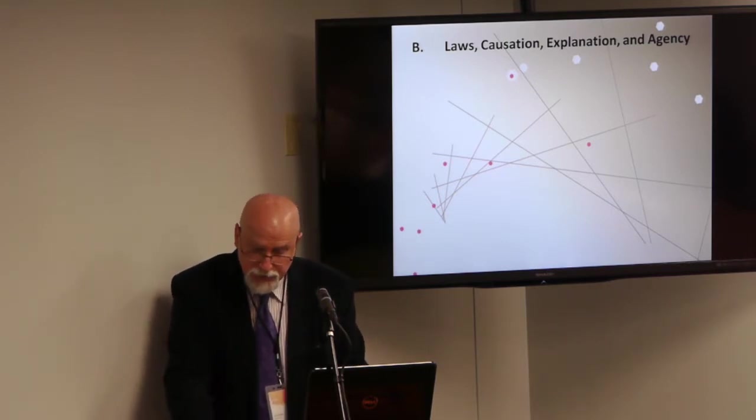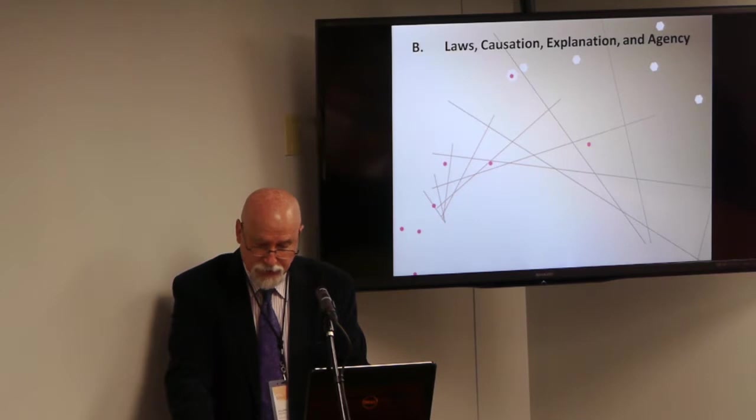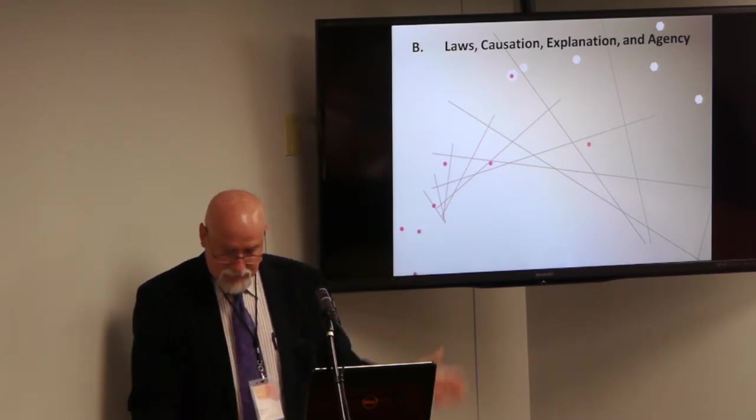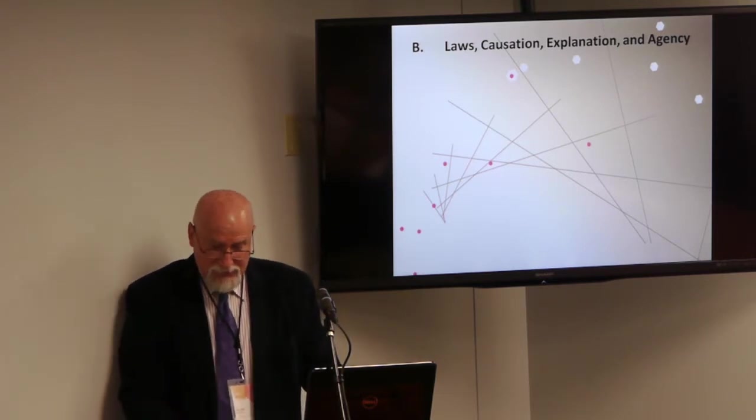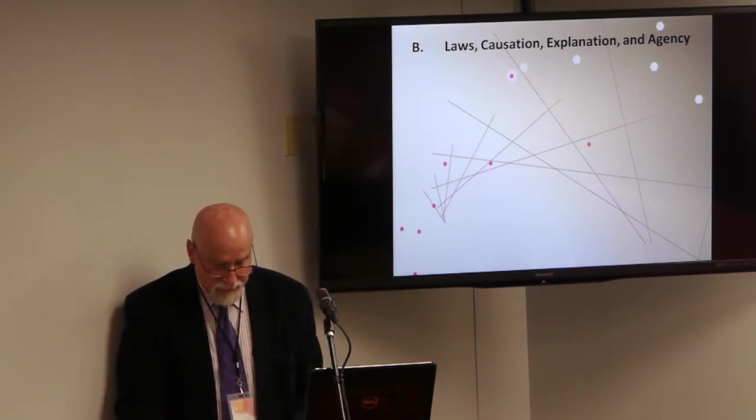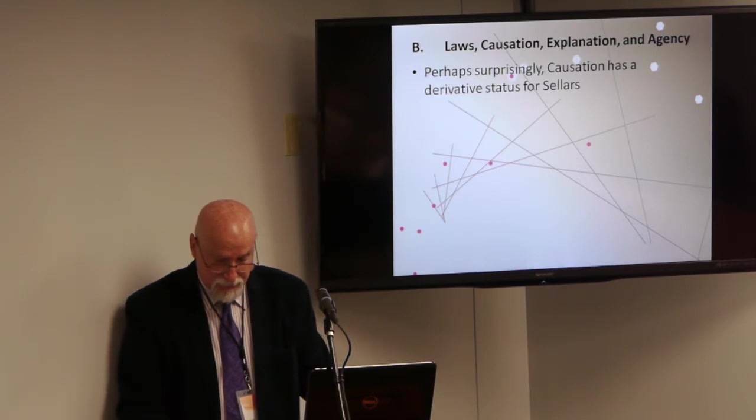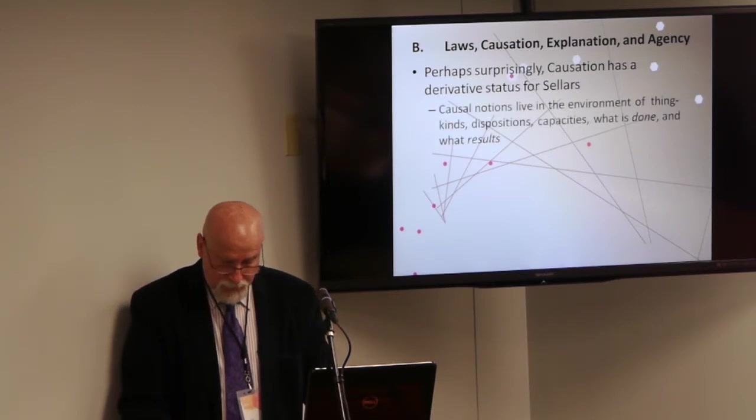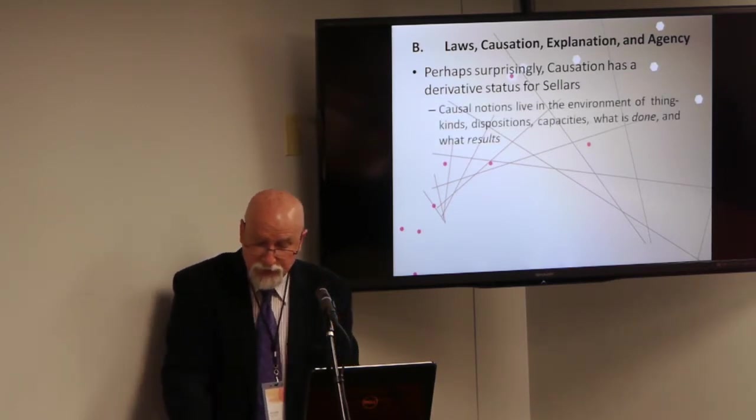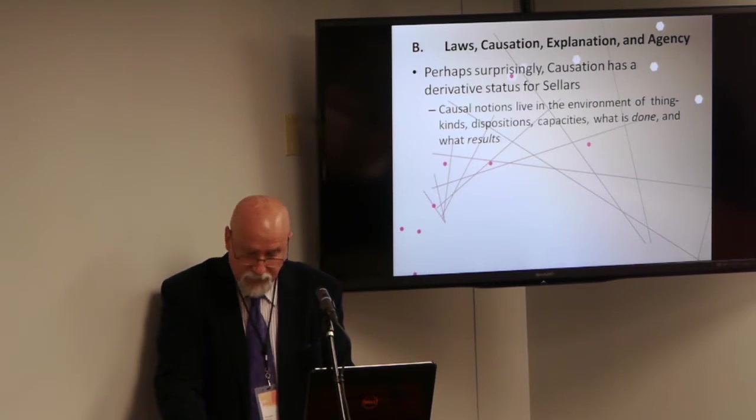So I said I'm particularly concerned here with causation because the causal and the real are connected for Sellars, and I want eventually to show that the kinds of things that are identified in part by their normative statuses can nonetheless be considered real on a plausible interpretation of Sellars' naturalism. I actually don't get to that in this paper, but hopefully life continues. But that turns out to be surprisingly a bit misleading for, in fact, causation ultimately has a derivative status in Sellars' system. And again, the text is CDCM. In Sellars' view, as I read him, causal notions, properly so-called, live in a very particular environment. It's an environment populated with thing kinds, dispositions, capacities, what is done, and what results.